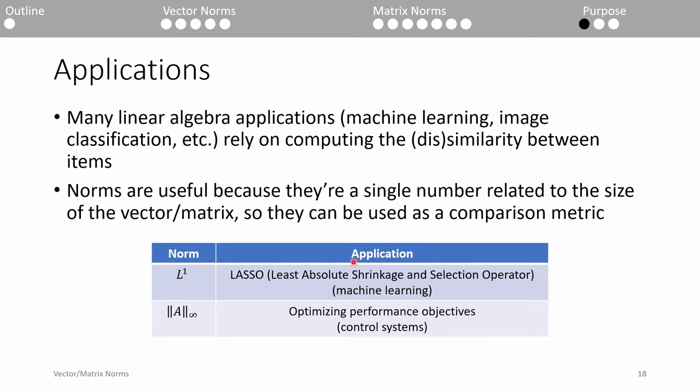The L1 norm is used extensively in machine learning in a technique called LASSO. Although you don't need to know what LASSO is, I'll give a very simplified explanation because I think it's cool. LASSO is like linear regression. When you perform linear regression on a dataset, you obtain the regression coefficients that represent the best fit line or curve.